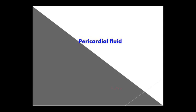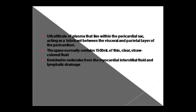Good morning class. This is our pathology class and our last topic of body fluid examination. Today we will examine the pericardial fluid. As the name indicates, pericardial fluid is found around the heart (pericardial sac). It is the plasma ultrafiltrate found in the pericardial sac, and it lubricates the visceral and parietal layers of the pericardium. In this space, 15-50 ml of thin, clear, straw-colored fluid is found, which we call pericardial fluid. The method to remove it is called pericardiocentesis.